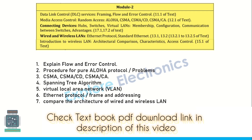Coming to Module 2: Data Link Control, Services, Connecting Devices, and Wired/Wireless LAN. Explaining flow and error control is very important. The procedure for Pure ALOHA protocol — and you may get problems on Pure ALOHA on throughput as well. CSMA, CSMA/CD, and CSMA/CA are repeatedly asked in any Computer Networks question paper. Spanning tree algorithm is also very important.